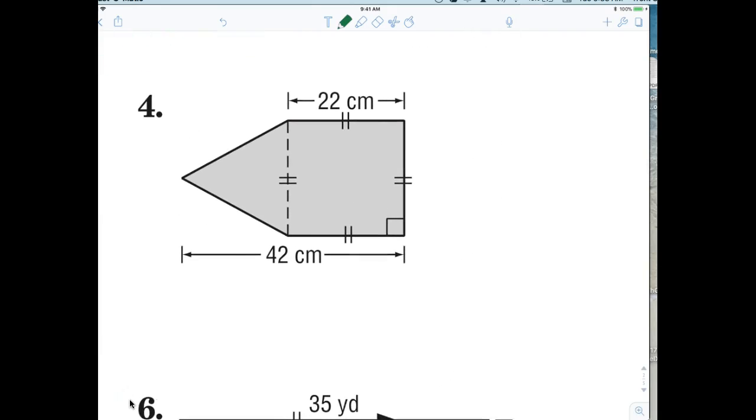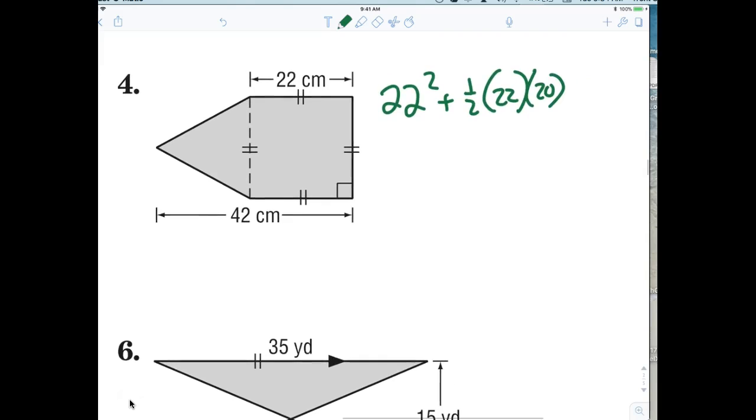Now, number 4, you should recognize, that is a 22 squared, plus 1 half, times 22, times 20. Come on, now. Again, it sounds, it looks sometimes easy, but you, trust me, you got to try it, all right? All right, now, again, if you're unsure about something, we said it was a square, so all of these are 22, so then the height of the triangle would have to be 20, whatever that is. All right, let's take a look at number 5.